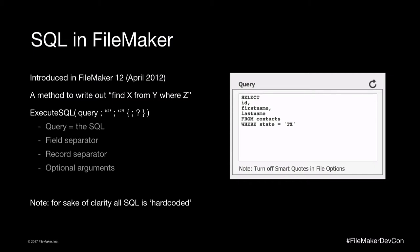I know some of you have used SQL, and SQL can be a little fragile in FileMaker if you change fields. For the sake of clarity, I'm just hard-coding all the SQL examples so we can see the content without any distractions with field names and custom functions. In this case, the query is just: SELECT ID, first name, and last name FROM the contacts table WHERE the state is Texas. Pretty simple.